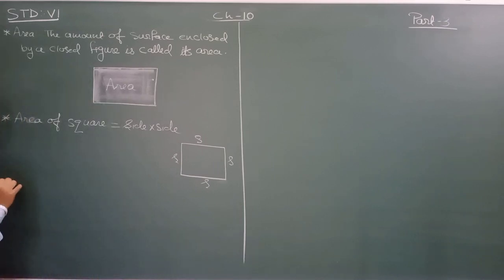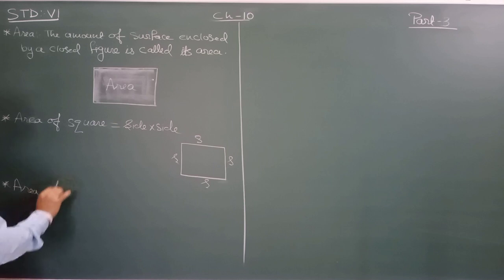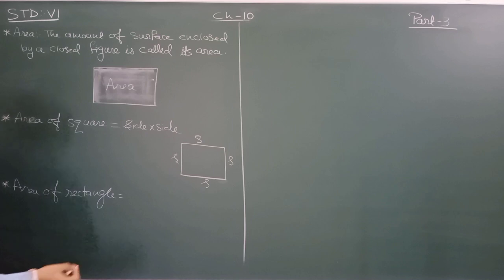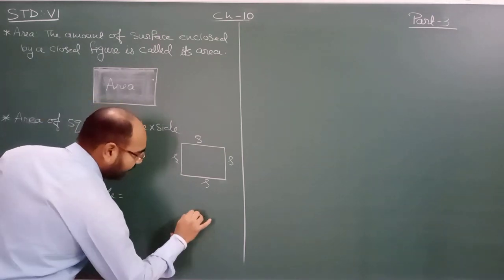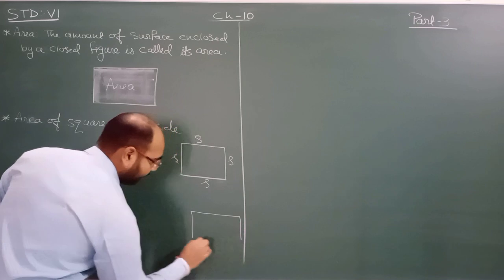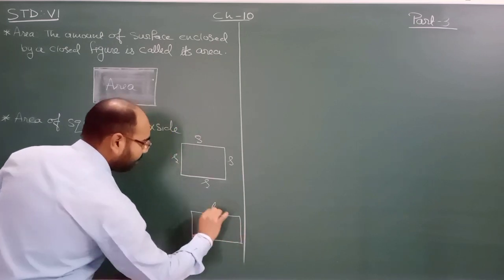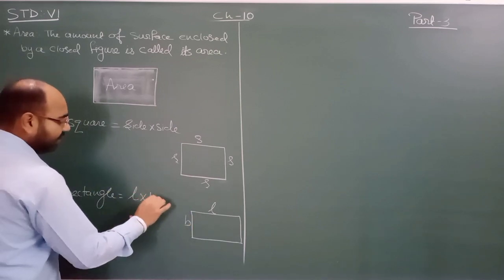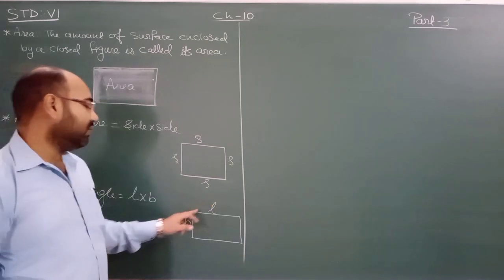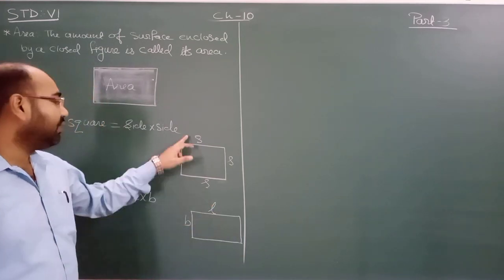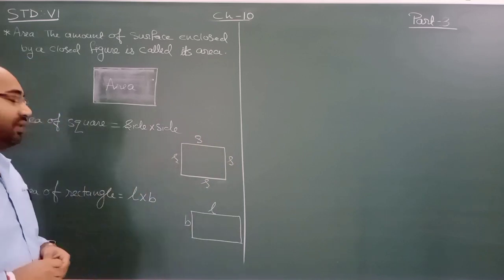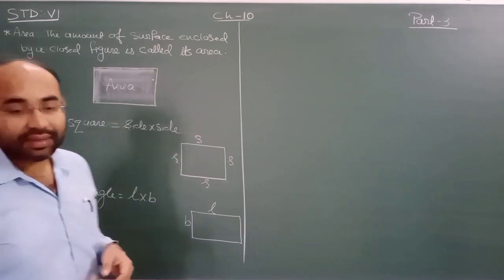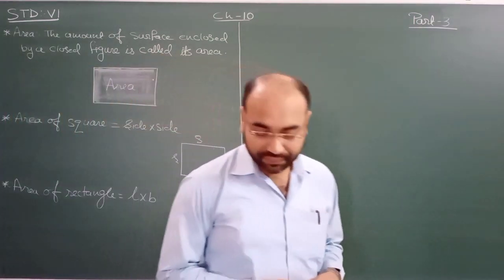If you want to find the area of a rectangle, the formula will be in the form of length and breadth. So the formula for area of rectangle is length into breadth. When we multiply side into side, that gives the area of the square. We are going to apply these formulas in exercise 10.3.